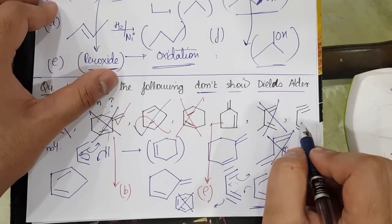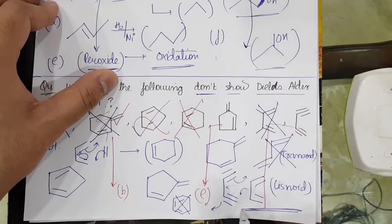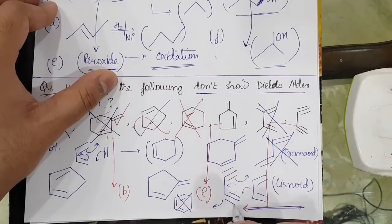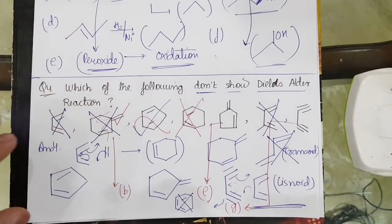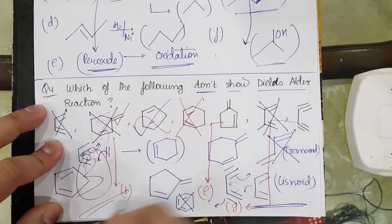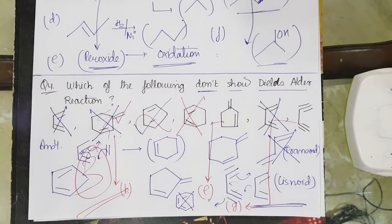So this will also not give the Diels-Alder reaction. So according to the given question it is useful. So it will be equal to C. So how many? 3 will be the correct answer for this question. I hope this is clear. Very good question. Now let me move on to the next question.